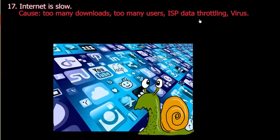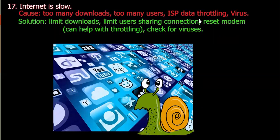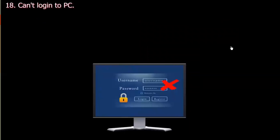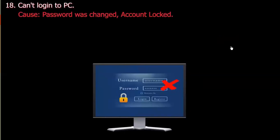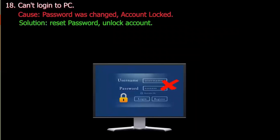Number seventeen: Internet is slow. Cause: Too many downloads, too many users, ISP data throttling, or a virus. Solution: Limit downloads, limit users sharing the connection, reset the modem — this can help with throttling — and check for viruses. Number eighteen: Can't log in to Wi-Fi. Cause: Password has changed or account is locked. Solution: Reset the password or unlock the account.